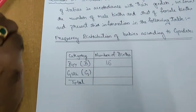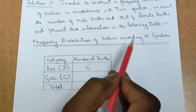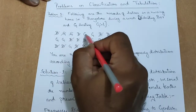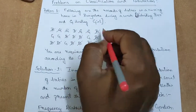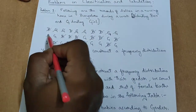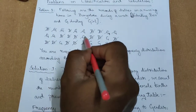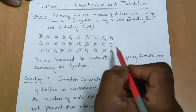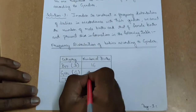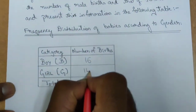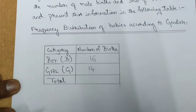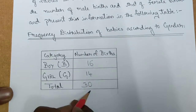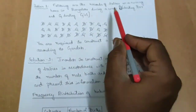Similarly, let us find out the total number of girl babies born in this nursing home: 1, 2, 3, 4, 5, 6, 7, 8, 9, 10, 11, 12, 13, 14. So total number of girl babies born in the nursing home is 14. So 16 plus 14 — together there are 30 babies born in this nursing home.